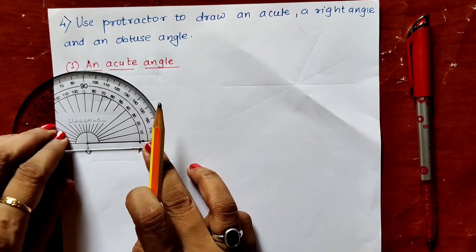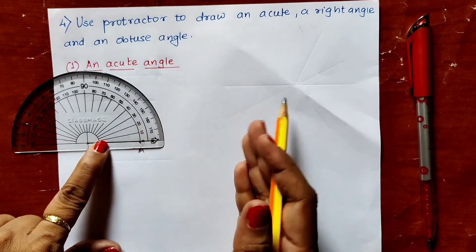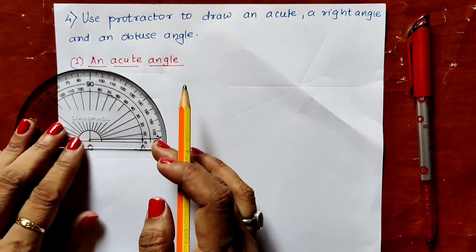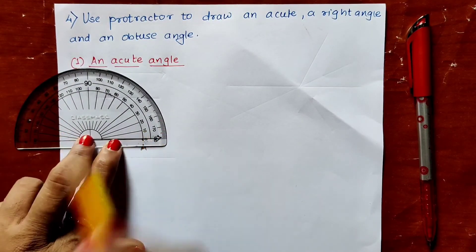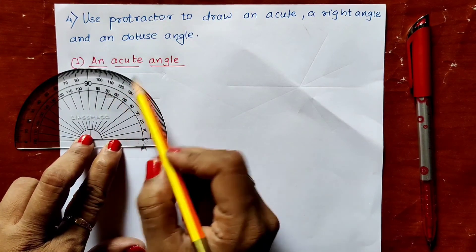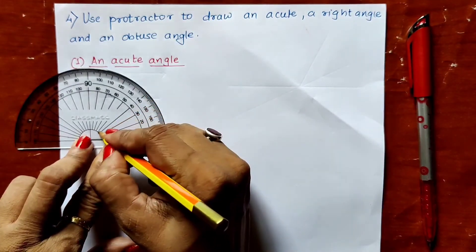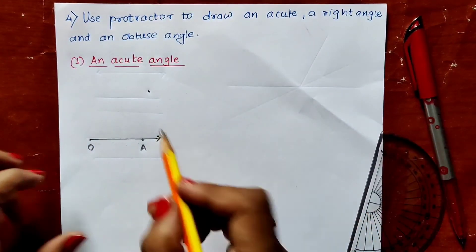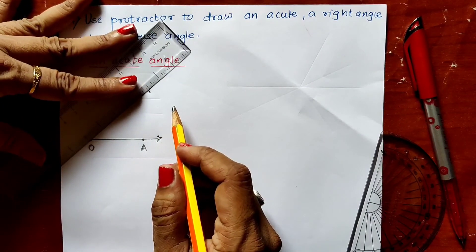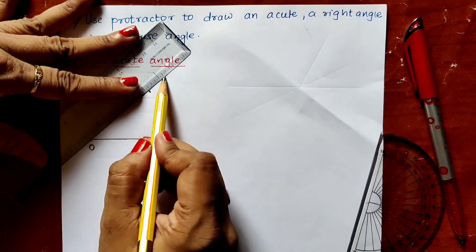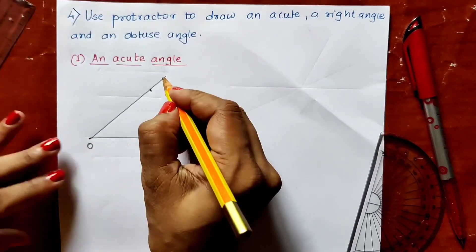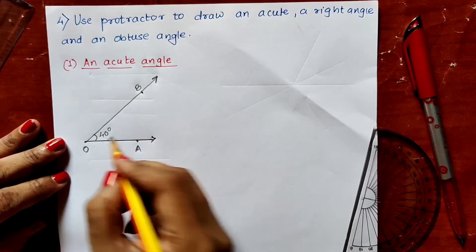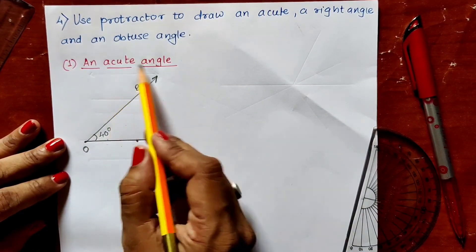For the acute angle, I will take 40 degrees — less than 90. Plot a small point at 40 degrees, then draw another ray from point O through that point. Name the second point B. This is a 40-degree angle — more than zero but less than 90 — so it is an acute angle. For the right angle, draw a ray PQ. Place the protractor midpoint on P, align the baseline with ray PQ, and mark a point at exactly 90 degrees. Draw a ray from P through that point to get ray PR. Put the 90-degree symbol.